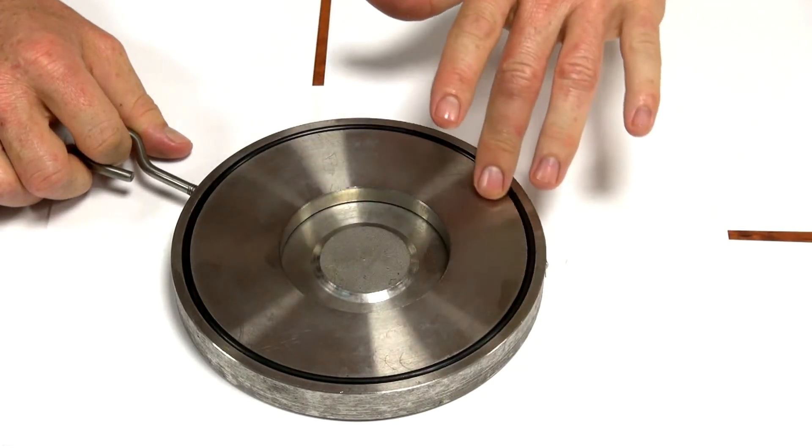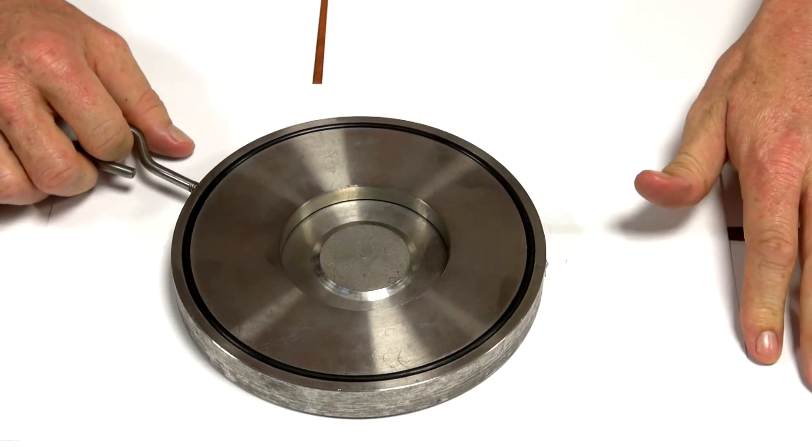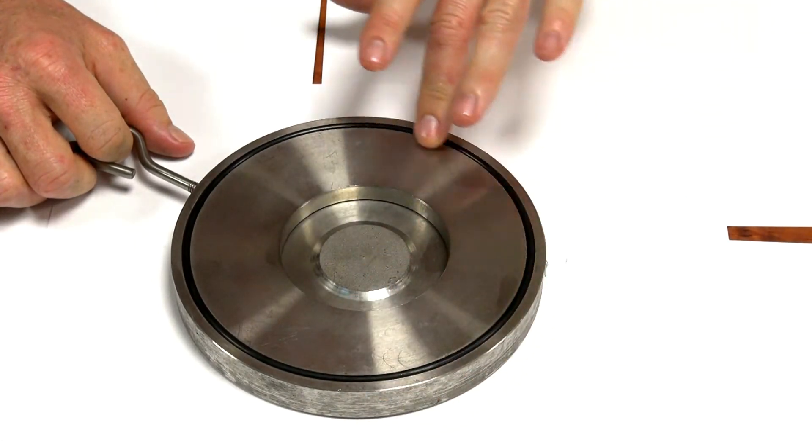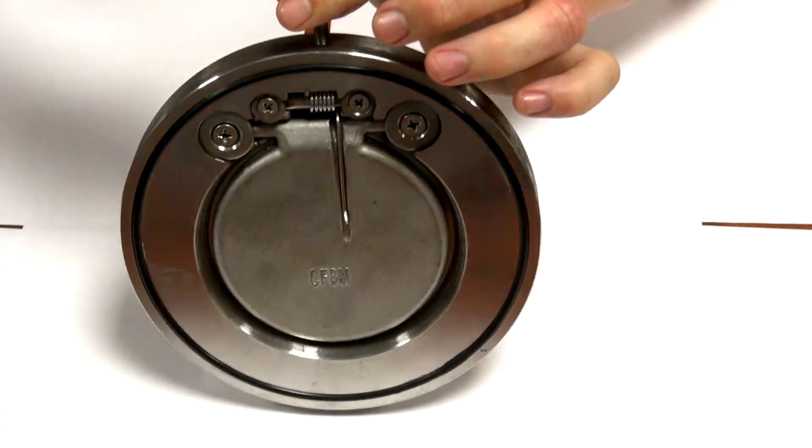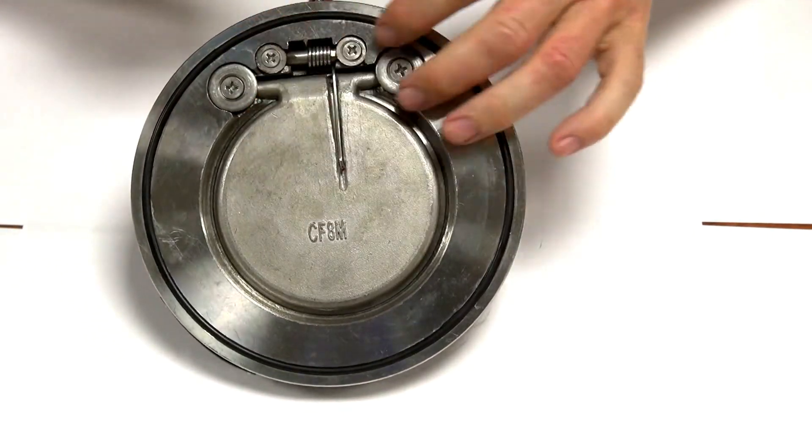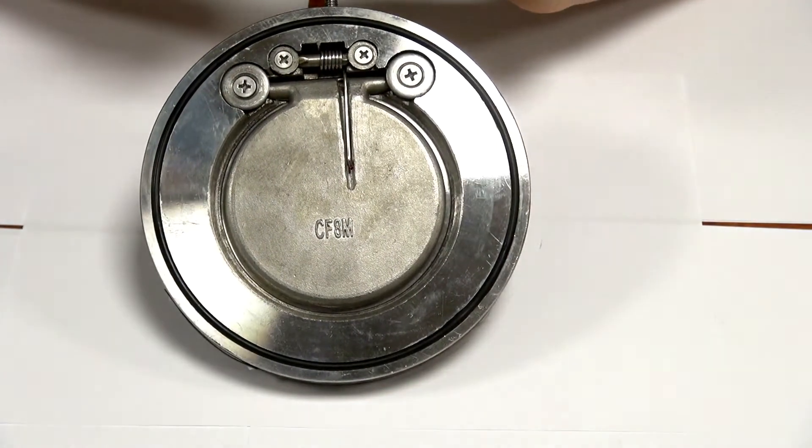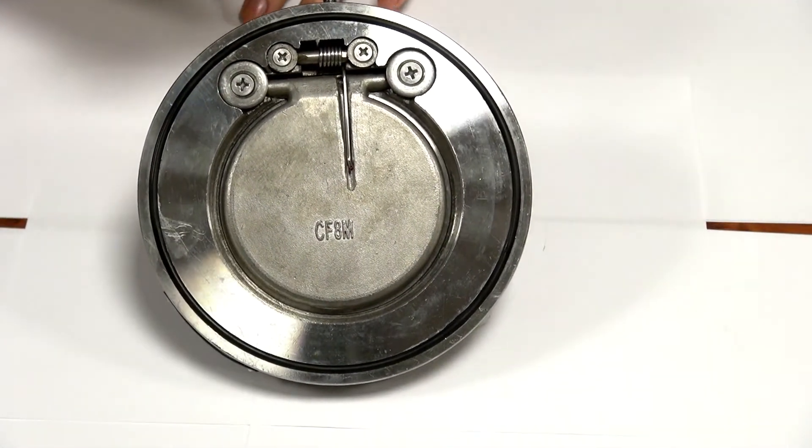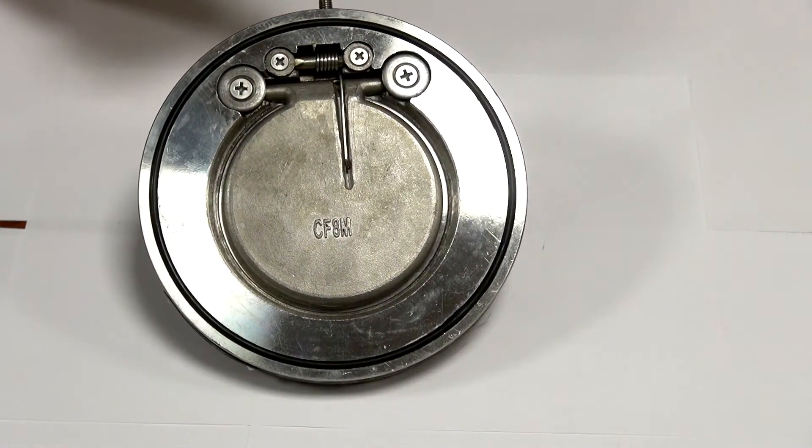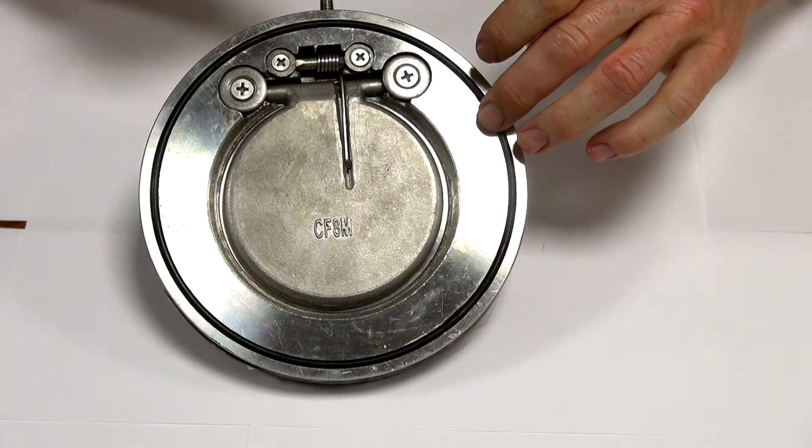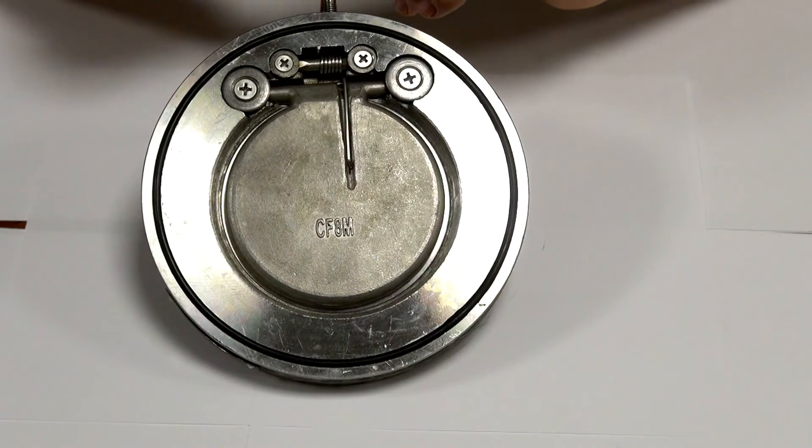Now it's a 316 stainless steel body, 316 stainless steel with a 316 stainless steel spring which really gives it a wide range of media that can go through this. Really what you want to check is NBR and if it's compatible with your media. Apart from that it's good for a wide range of media.